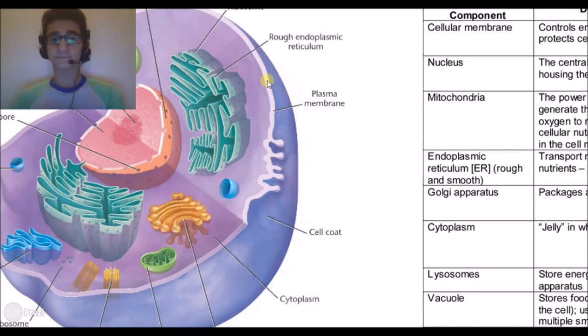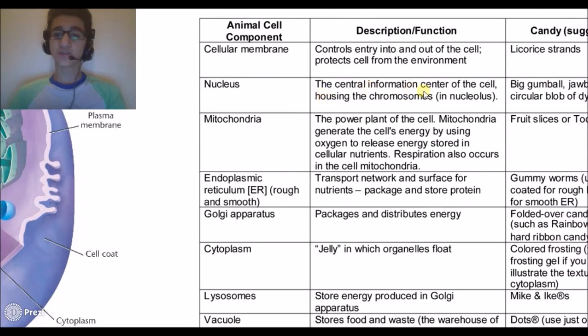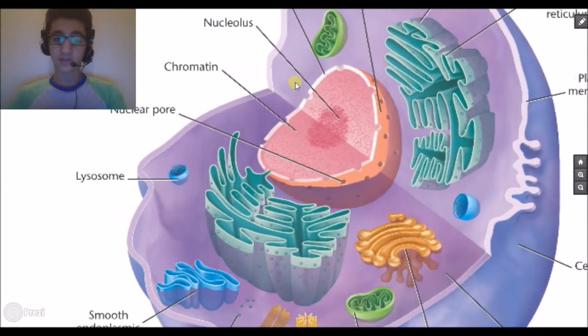The nucleus is the central information center of the cell, housing the chromosomes inside the nucleolus. As you can see, this is the nucleus and inside the nucleus there is the nucleolus which contains chromosomes.